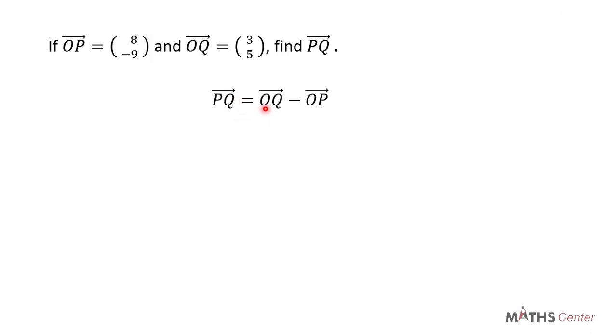which is the vector OQ, minus the position vector of P, which is the vector OP. We have both the vector OQ and the vector OP, so you substitute them here.